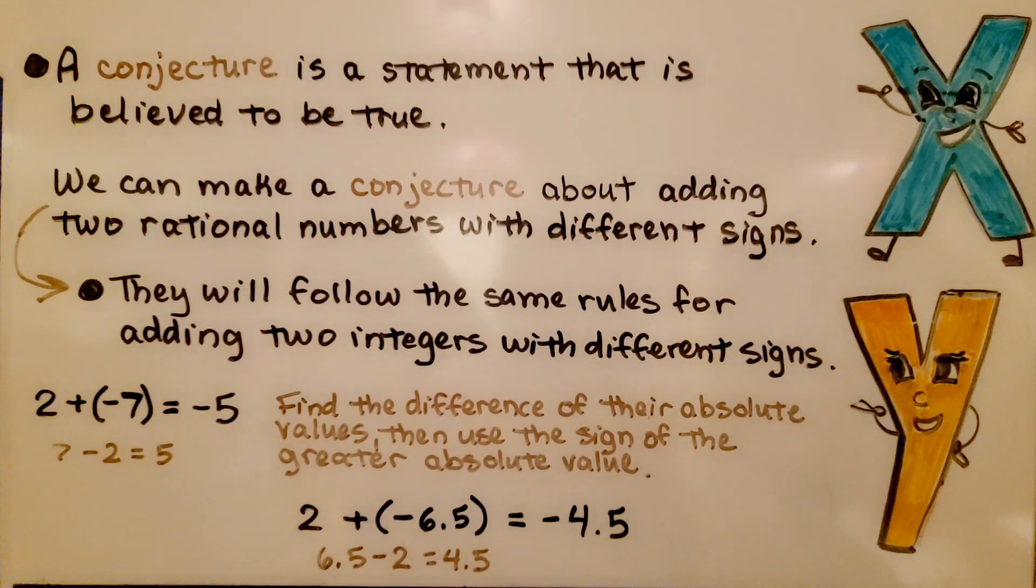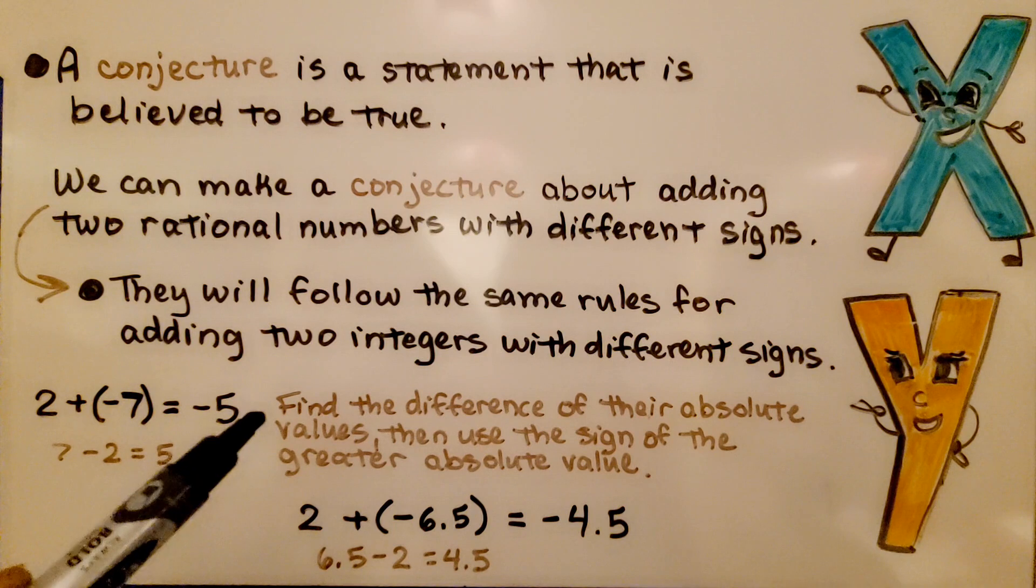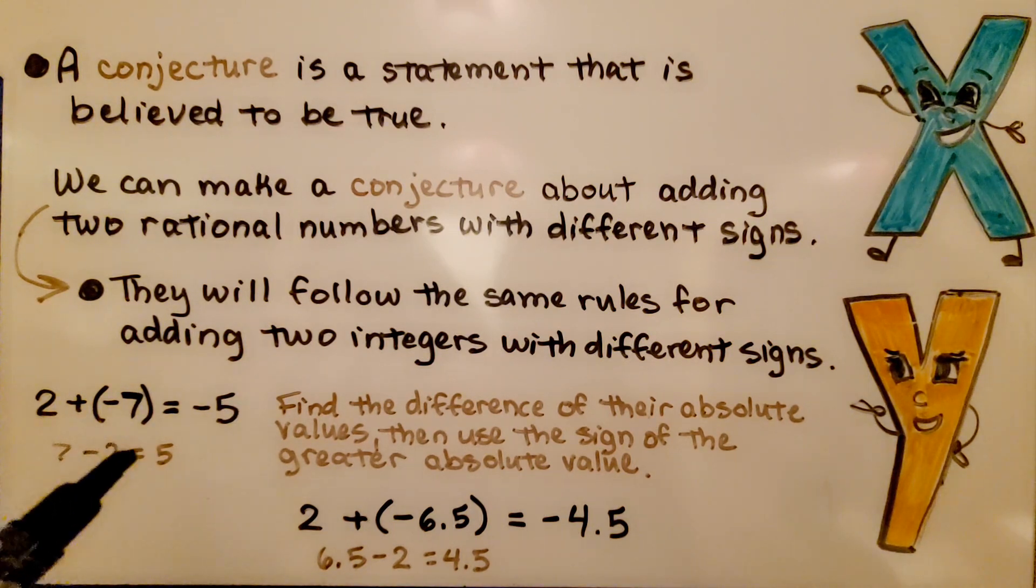A conjecture is a statement that's believed to be true. We can make a conjecture about adding two rational numbers with different signs. They will follow the same rules for adding two integers with different signs. If we have positive 2 plus negative 7, we find the difference of their absolute values. That would be 7 minus 2. Their difference is 5.